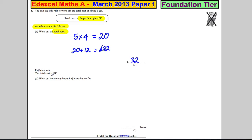Raj hires a car. The total cost is £40. How many hours did Raj hire the car for? Well, we can work backwards. We know you have to pay £12 no matter what, and he paid £40. So 40 subtract 12 gives us £28.